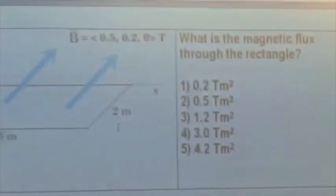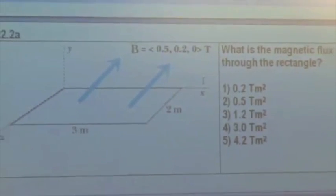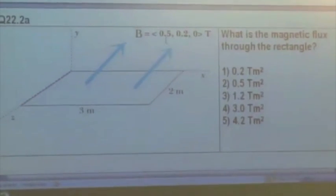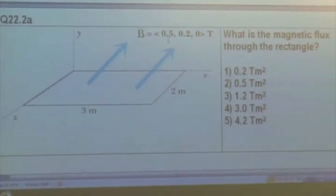Here's a surface, 3 meters by 2 meters. Here's a magnetic field that has an X component of 0.5, Y component of 0.2, Z of 0, Tesla. What's the magnetic flux? Just finding the flux. Just a little review here.